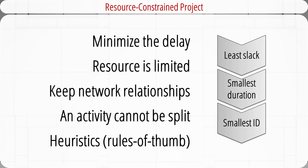It's an iterative process starting at the first time period of the project, scheduling period by period all activities using three priority rules. Rule 1: least slack. Rule 2: smallest duration. Rule 3: lowest activity identification number. If three activities are eligible to start and require the same resource, the first scheduled is the one with least slack. If all activities have the same slack, choose the smallest duration. When both slack and duration are equal, the tie is broken by the lowest activity ID number.